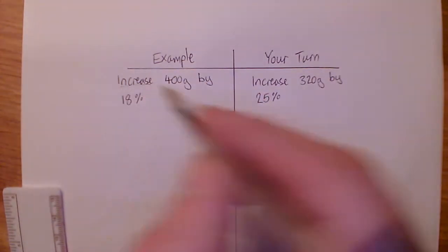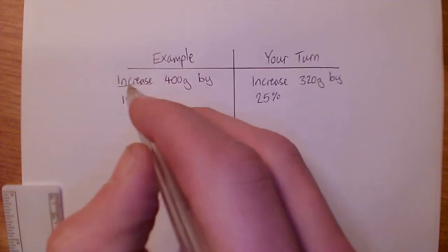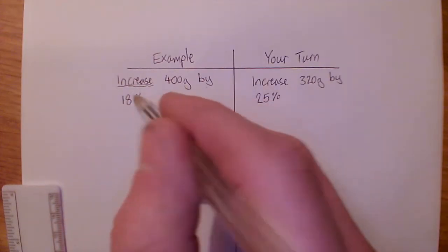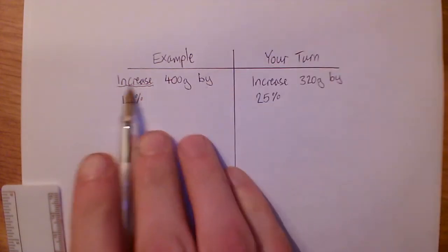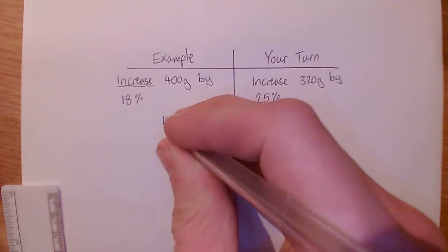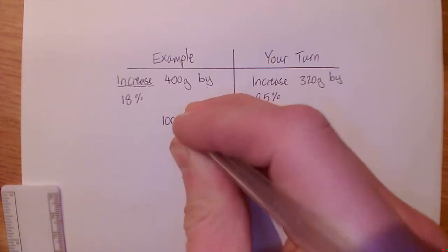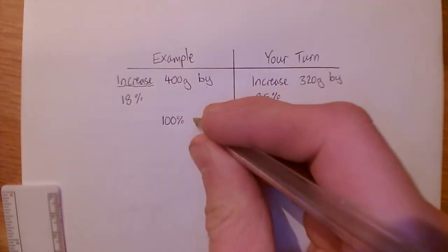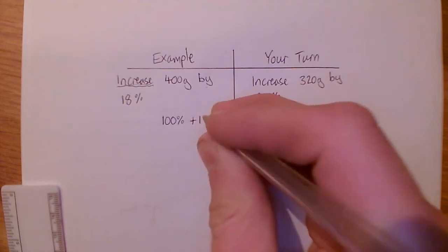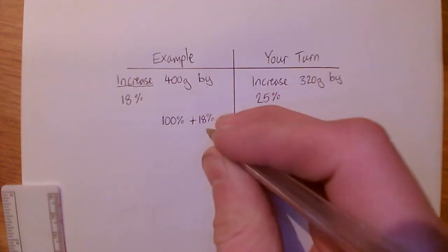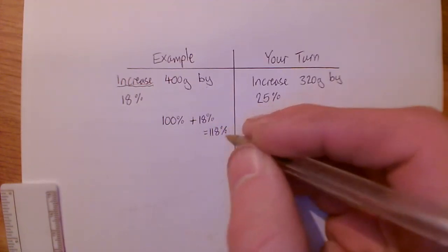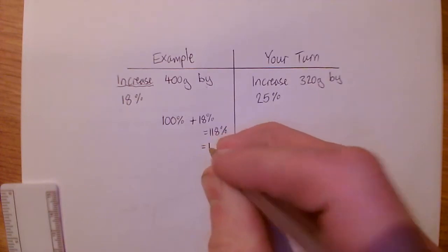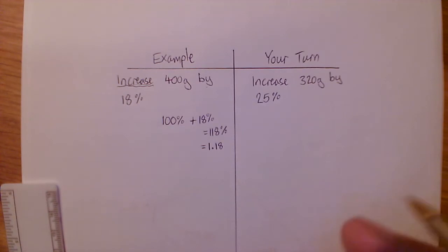So we're increasing by 18%. Now if we're finding 18%, we'd just multiply and turn this into a decimal, 0.18, like we did last week. But here we're increasing. So the very first thing we have to do is if we have 100% of something and we increase by 18%, that is adding 18%. So that gives us 118% of the original amount, which as a decimal is 1.18 because everything moves two places to the right.